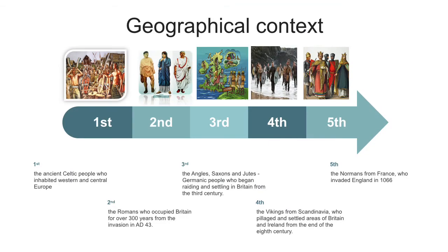Let's revise our previous lectures and identify a geographical context. People in the four lands of Britain derived from a host of ancestral sources, notably the prehistoric cultures which produced such impressive monuments as Stonehenge, the ancient Celtic people who inhabited Western and Central Europe, the Romans who occupied Britain for over 300 years from the invasion in AD 43, the Anglo-Saxons and the Jutes, Germanic tribes who began raiding and settling in Britain from the 3rd century, the Vikings from Scandinavia who settled areas of Britain and Ireland from the end of the 8th century, and the Normans from France who invaded England in 1066.